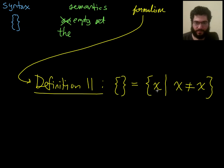So how do we read this? It's the set of x's such that x is not equal to x. Okay, but we should be able to read this without mentioning the bound variable x. It's the set of things that are not equal to themselves.